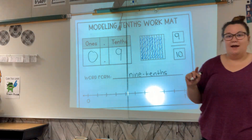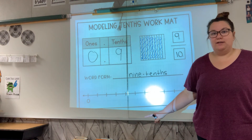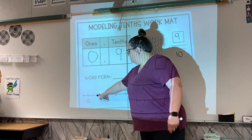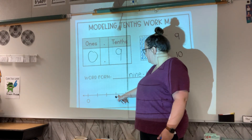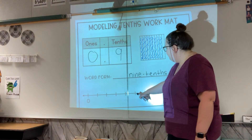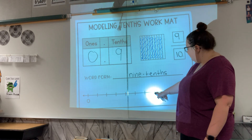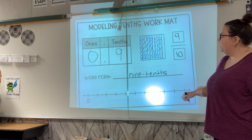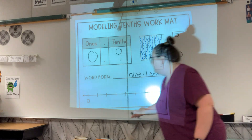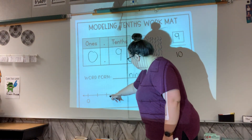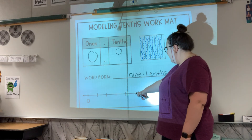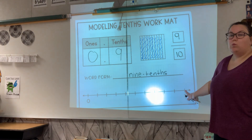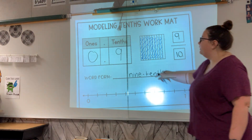I wanted to put it on a number line, just like how we were doing fractions on number lines. Where we have one whole front line, we'd have one tenth, two tenths, three tenths, four tenths, five tenths, six tenths, seven tenths, eight tenths, nine tenths, ten tenths. It's the same exact thing for decimals — we'd have 0.1, 0.2, 0.3, 0.4, 0.5, 0.6, 0.7, 0.8, 0.9, and one.